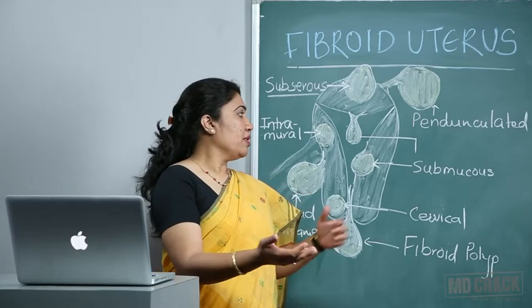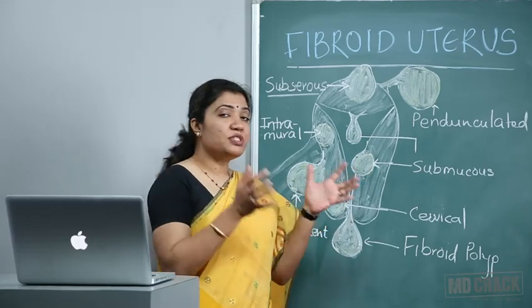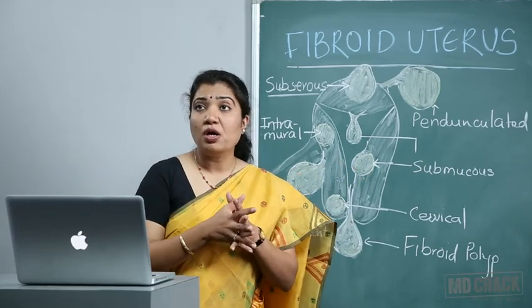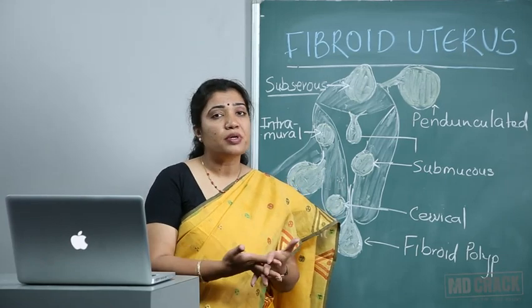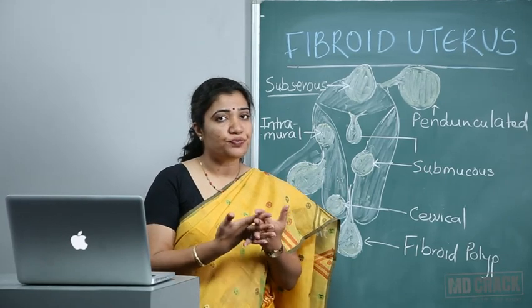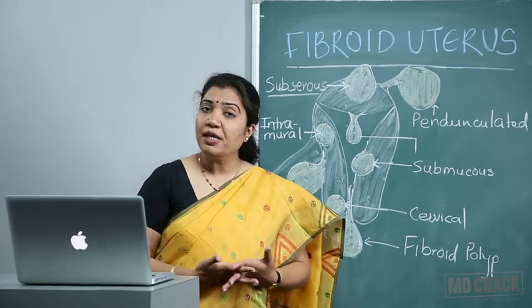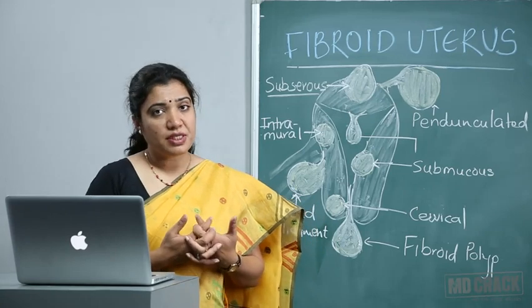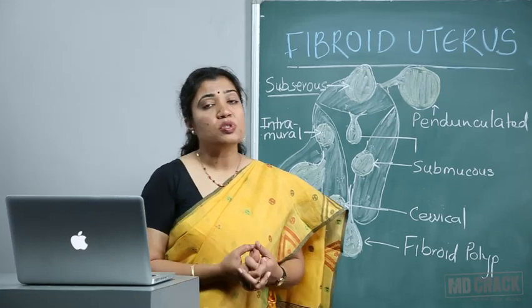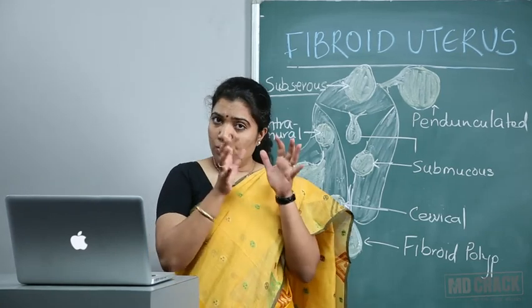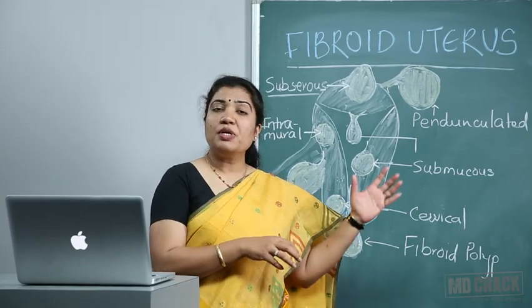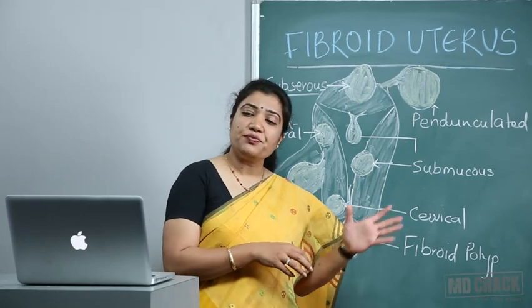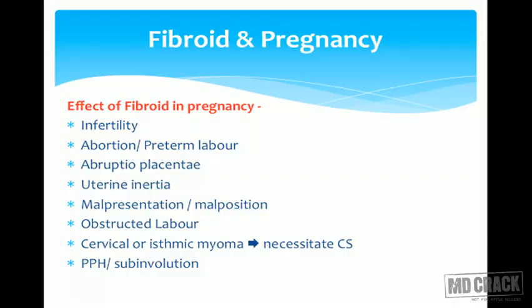During cesarean section, if myomas are in the lower segment — where we perform the surgery — they may be in our surgical plane and cause problems. Usually in cervical fibroids we have to do cesarean section and find a place for the incision. In the third stage of labor, fibroids obstruct or hamper retraction of the uterus, leading to PPH (postpartum hemorrhage).